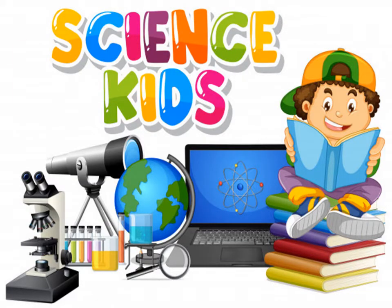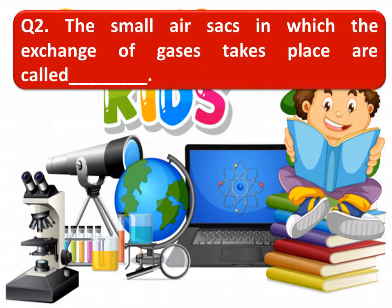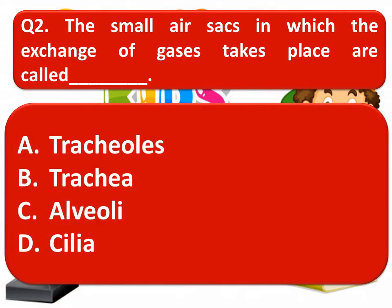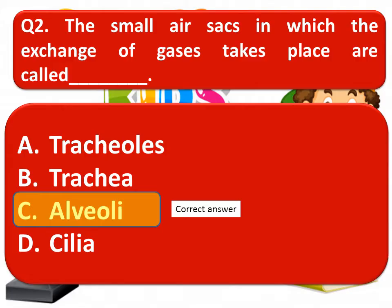The next question is: the small air sacs in which the exchange of gases takes place are called — tracheolus, trachea, alveoli, or cilia? The correct answer is alveoli.